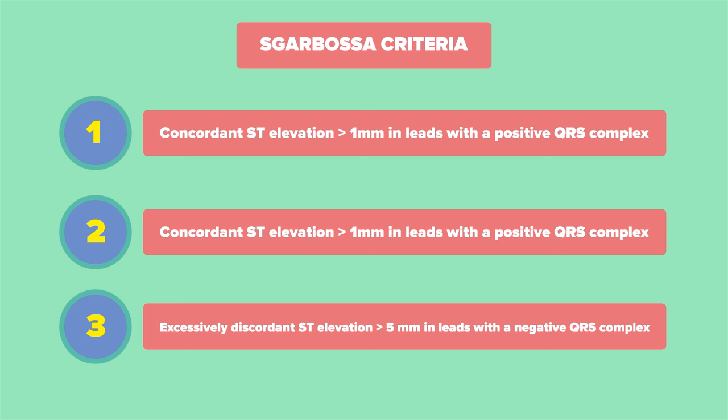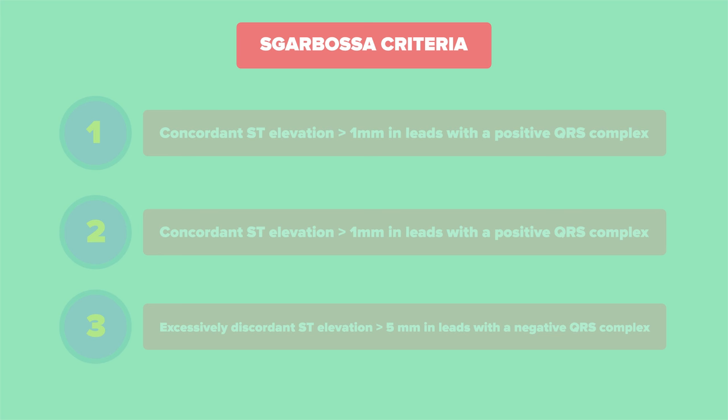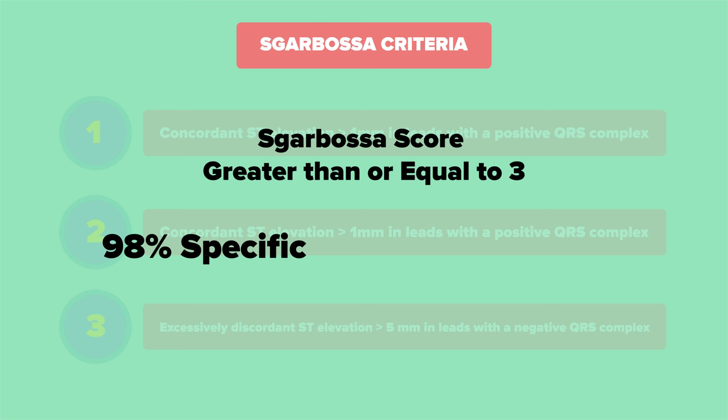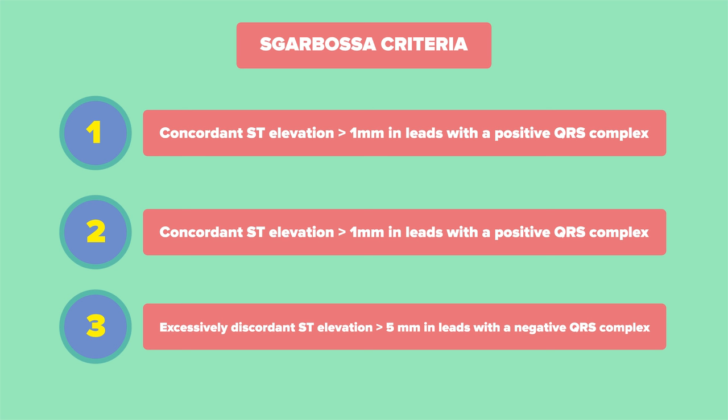Now that we've gone through the scoring system, a Scarbosa score of greater than or equal to three is highly specific — up to 98% — but much less sensitive, about 20%. In other words, because concordance assigns more points, when you see an EKG with concordance this is more suggestive of ischemia compared to excessive discordance alone. Although the Scarbosa criteria is highly specific and less sensitive, you can increase sensitivity by comparing changes with previous EKGs or observing dynamic changes with serial EKGs.